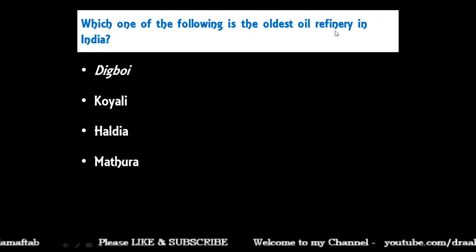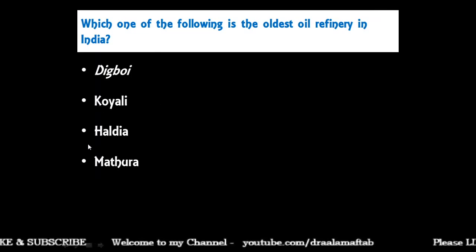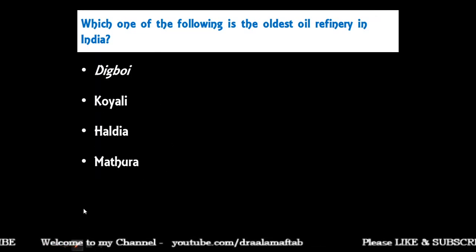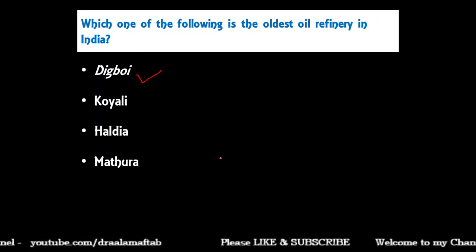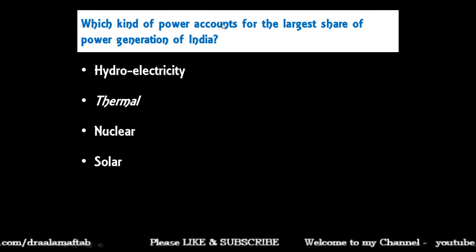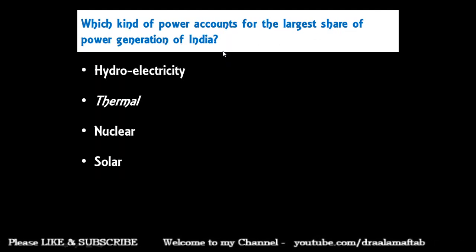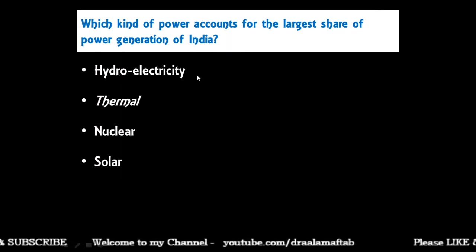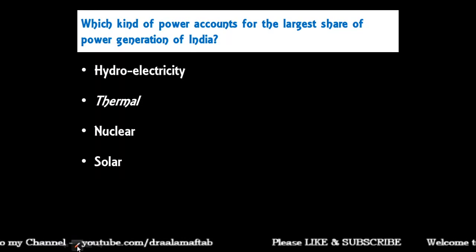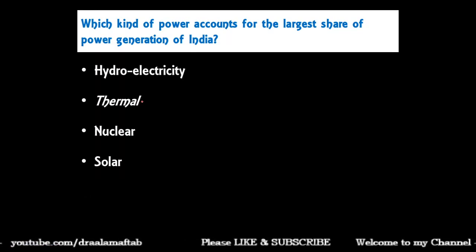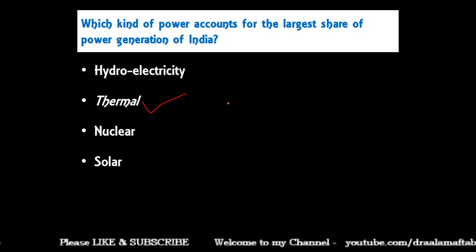Which one is the oldest oil refinery in India: Digboi refinery, Coily, Haldia, or Mathura? The oldest oil refinery in India is at Digboi, Assam. Which kind of power accounts for the largest share of power generation in India: hydroelectricity, thermal electricity, nuclear, or solar electricity?